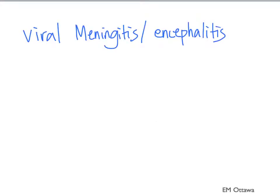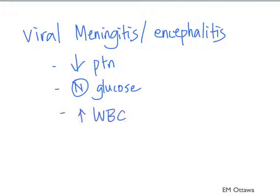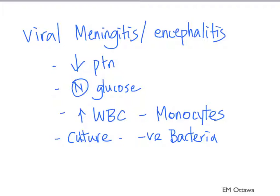In viral meningitis or encephalitis, this is what we'll see: low protein, normal glucose, high white blood cell count with mostly monocytes. The gram stain and culture are negative for bacteria. The viral PCR may be positive.